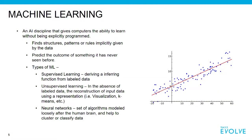We're going to talk a little bit about machine learning. Machine learning is an AI discipline that gives computers the ability to learn without being explicitly programmed. It finds structures and patterns in the actual data set, and once trained, it can predict an outcome of a novelty event that's never been seen before — that's supervised learning.